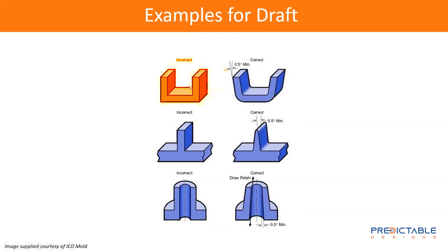Now, a wall that is not parallel to the direction of pull needs no draft angle, because the mold just goes straight up — there's no friction on that wall surface as the part is removed. That's the key aspect of draft: it reduces the friction of removing the part.